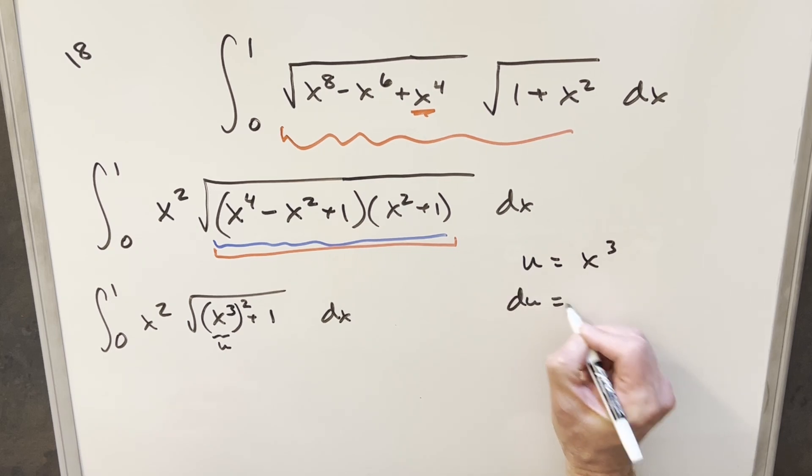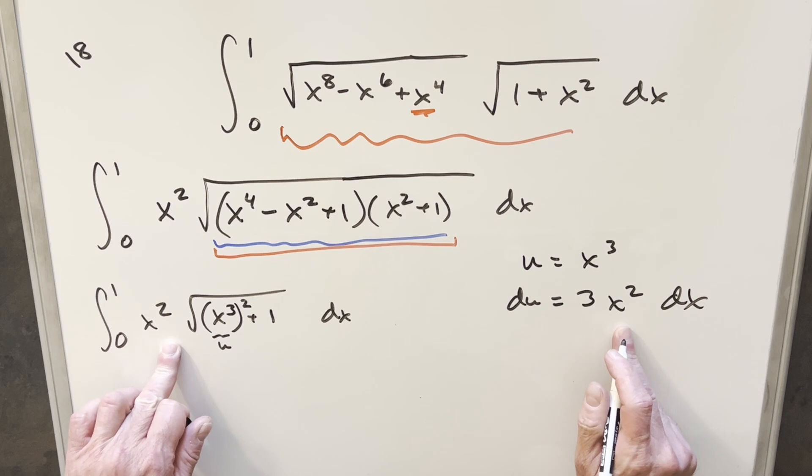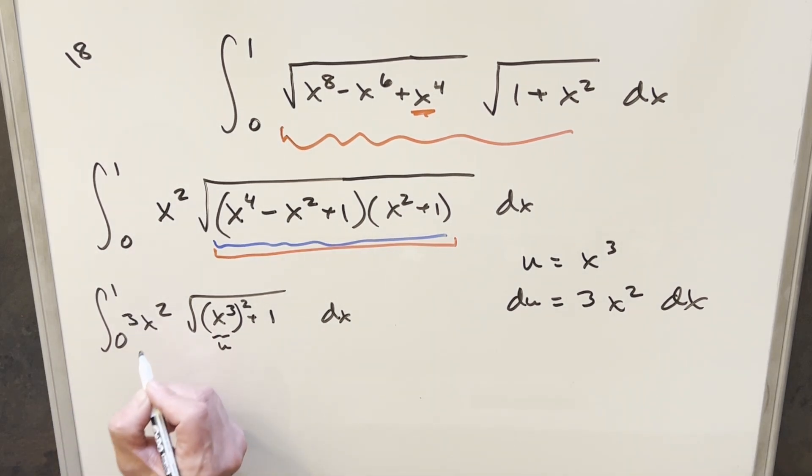I'll take a derivative. So du is going to be 3x squared dx. I have the x squared. I have the dx. I don't have the 3. Let's multiply by 3 here. And then I'll multiply by 1 third just so I don't change it. And then we can just go ahead with the substitution.